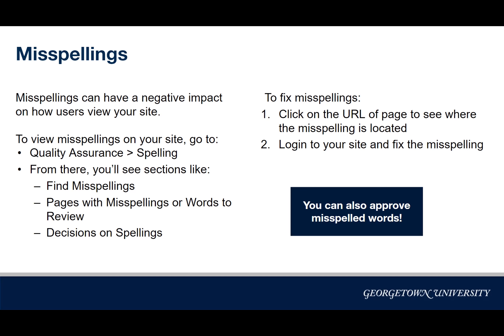To fix a misspelling, similar to the process for broken links and accessibility issues, click on the URL of the page, which opens a new tab showing where the misspelling is located. From there, go into WordPress, log in, and fix the misspelling.